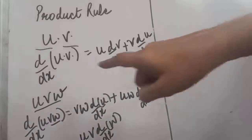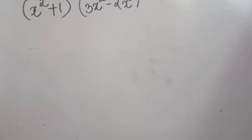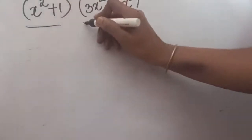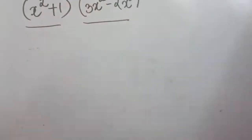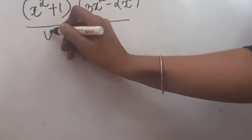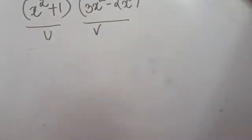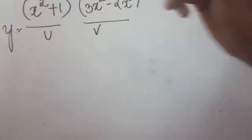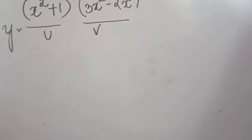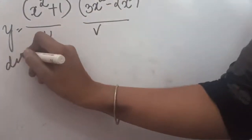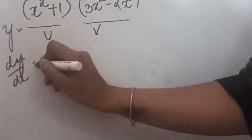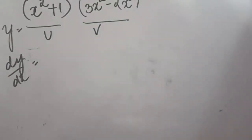Let us first see an example with two factors, then we will see an example with three factors. In this question, there is one function and a second function, and the two functions are being multiplied. So we can apply the product rule here. This is our u and this is our v. We will set the entire function equal to y.